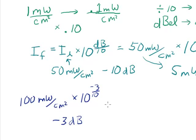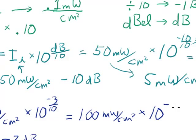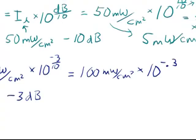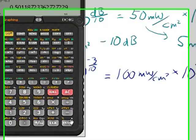And so that's 100 milliwatts per square centimeter times 10 to the negative 0.3.